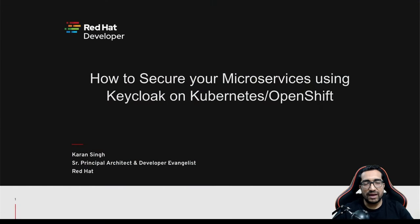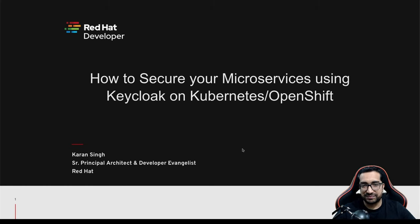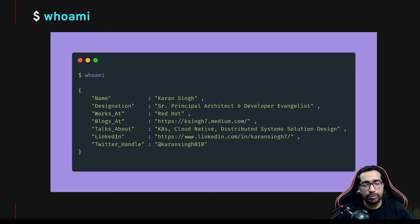I'm Karan Singh, and welcome to NeosCon 2022. In this talk, we're going to talk about how you can secure your microservices running on OpenShift or Kubernetes using KeyCloak, which is an open source identity and access management solution. I work for Red Hat as a Senior Principal Architect and Developer Evangelist. I blog at Medium, so you can follow my blog and also follow me on LinkedIn if you want to know more about Cloud Native, Kubernetes, and Distributed System Designs.